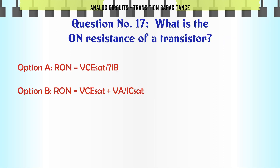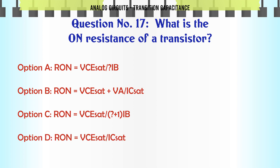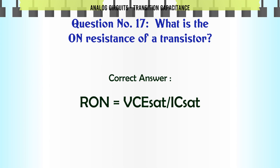What is the on-resistance of a transistor? A: R_on = VCESAT / IB, B: R_on = VCESAT / VECSAT, C: R_on = VCESAT × IB, D: R_on = VCESAT / IcSAT. The correct answer is R_on = VCESAT / IcSAT.